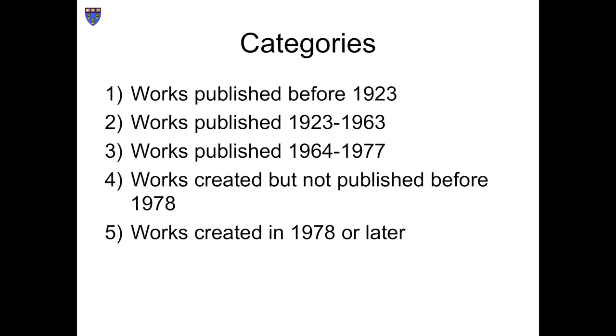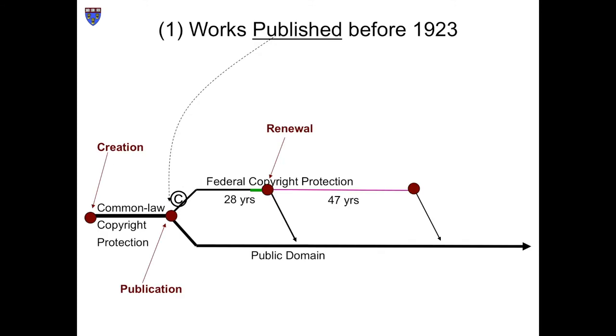Now let's adopt a presentist stance. It's 2013. How long do U.S. copyrights last? The answer depends upon when and how they were born. More specifically, you need to differentiate five different categories of copyrighted works. The simplest group consists of works published before 1923. Some of these got the benefit of the extension of the renewal term, but all of them fell into the public domain before the Copyright Term Extension Act could rescue them, and that Act did not lift them back up. The upshot is that the copyrights on these works have expired.